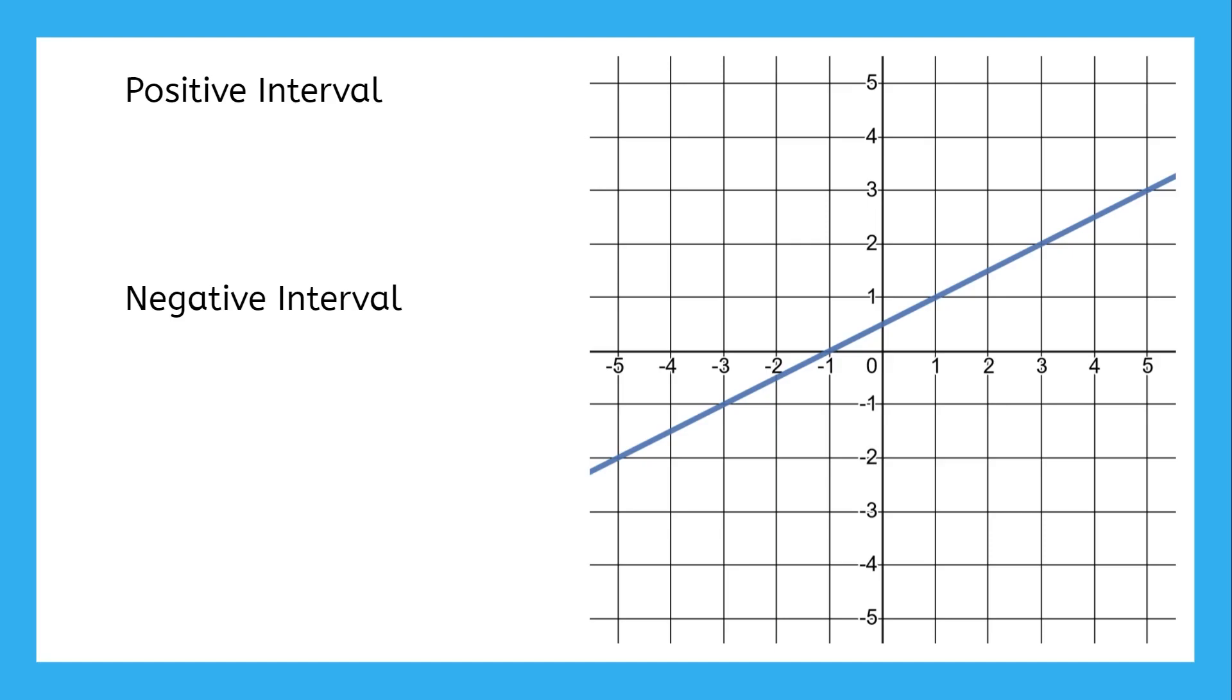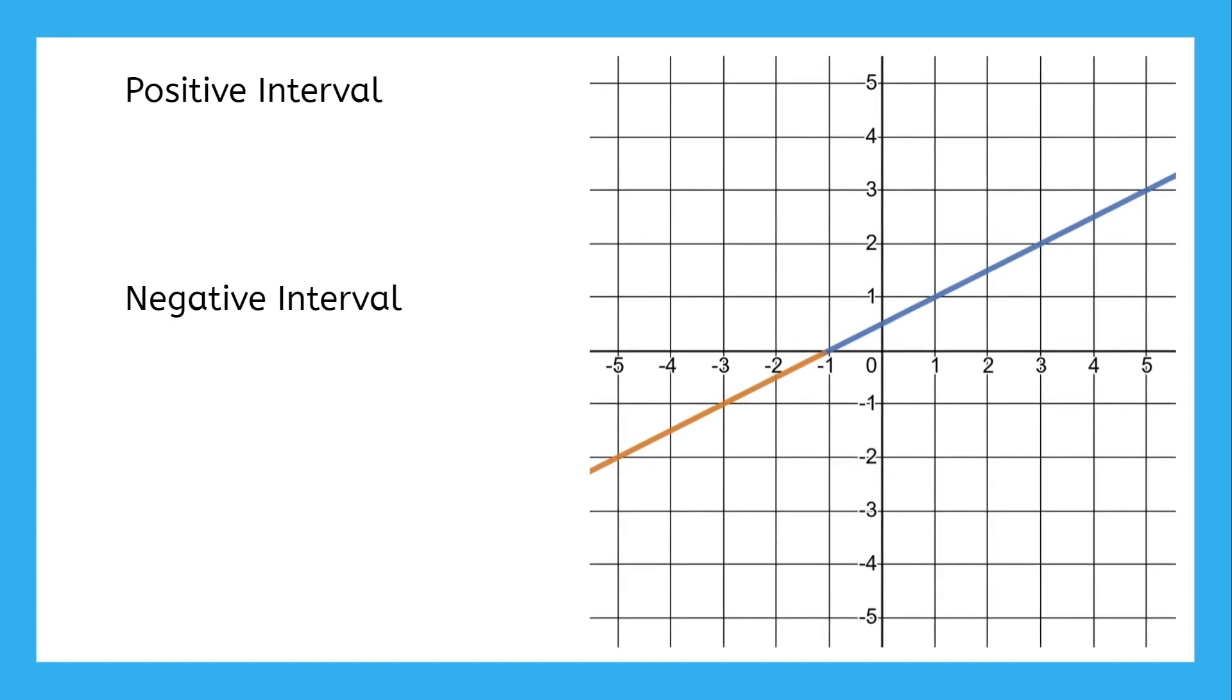If we start on the left side of the graph, we see that it starts out below zero, so this is a negative interval. How would we write it? The interval starts off the graph to the left, so we call that negative infinity. Where does the negative interval end? It ends where the function output hits zero at an input of negative one. We can't use a square bracket here because negative one gives an output of zero, and we can't include that in the negative interval.